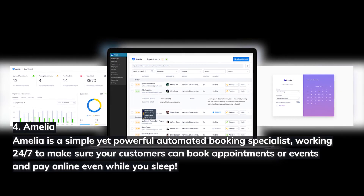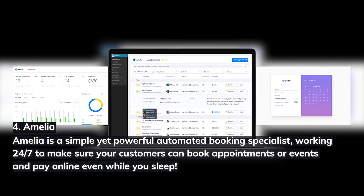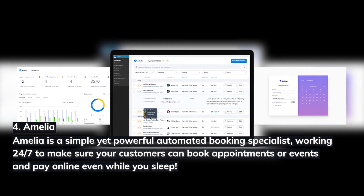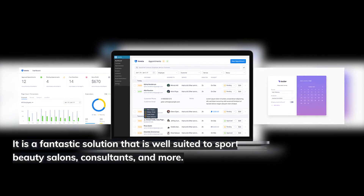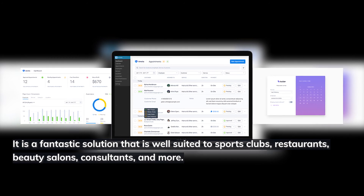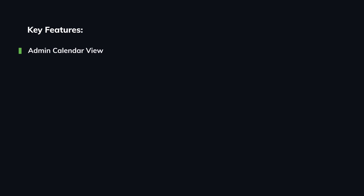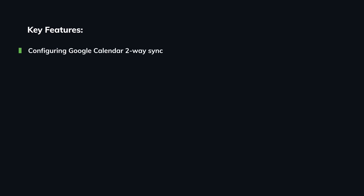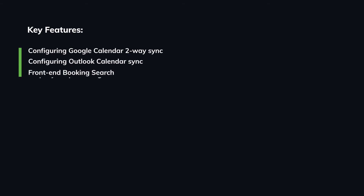Number four: Amelia. Amelia is a simple yet powerful automated booking specialist working 24/7 to make sure your customers can book appointments or events and pay online even while you sleep. It is a fantastic solution well suited to sports clubs, restaurants, beauty salons, consultants, and more. Key features include: admin calendar view, customizable design, SMS notifications, recurring appointments, custom fields, WooCommerce integration, events, Google Calendar two-way sync, Outlook Calendar sync, front-end booking search, step-by-step booking wizard, and calendar for managing appointments.